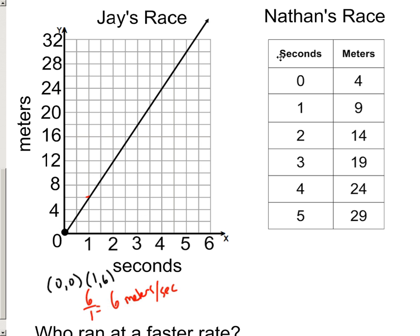Over here, Nathan's race, we're going to assume it's a linear relationship. 9 minus 4 is 5, and 1 minus 0 is 1. So Nathan is only able to go 5 meters per second. And that's the reason that Jay gave him a head start. But if we're just wanting to know who's running at a faster rate, well, Nathan is only going 5 meters a second, and Jay is running 6 meters a second. So it's definitely Jay.